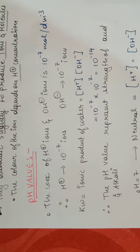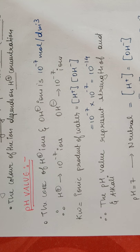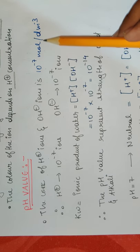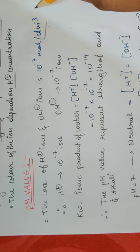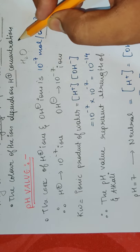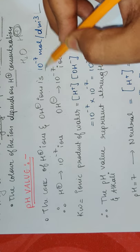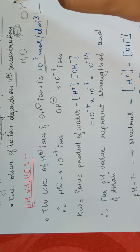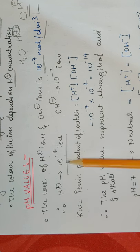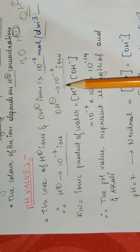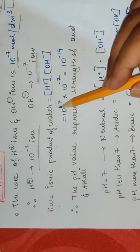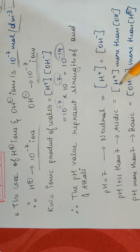The concentration of H+ ion is 10 to the power minus seven moles per decimetre cube. Decimetre cube is also known as litre. So what they're trying to say is if H+ concentration is 10 to the power minus seven, then OH- concentration is also 10 to the power minus seven.